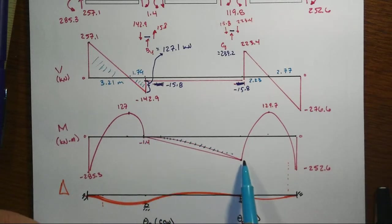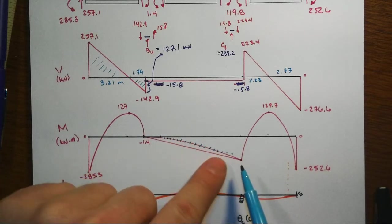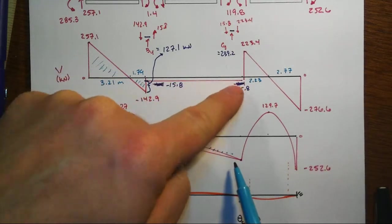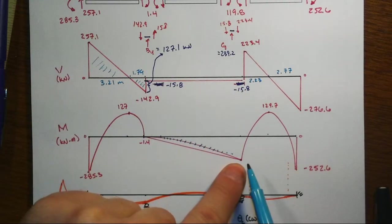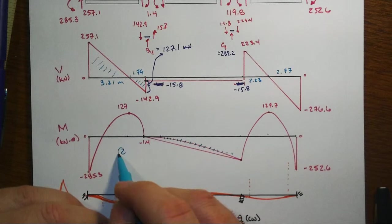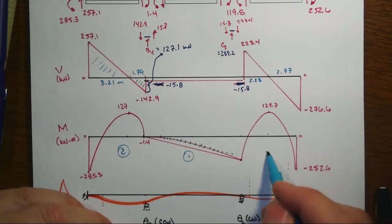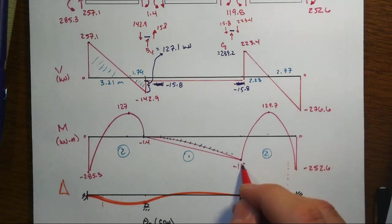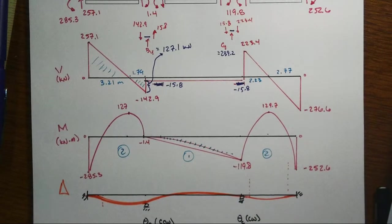Then we come along, and this is where I made another mistake. We don't have a variation in the slope of the moment diagram. The shear is constant, so that should have been a straight line. I finally got that in there, so we have second order, first order, and then second order again. We end up coming down to a value that is minus 119.8 kilonewton meters.